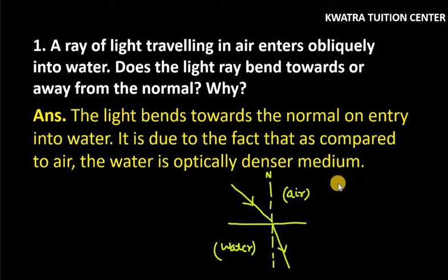And why does it happen like this? Because our water is quite denser as compared to air. Air is a rarer medium. And the bottom one is denser medium. So, when our ray of light goes from rarer to denser, it bends towards the normal.